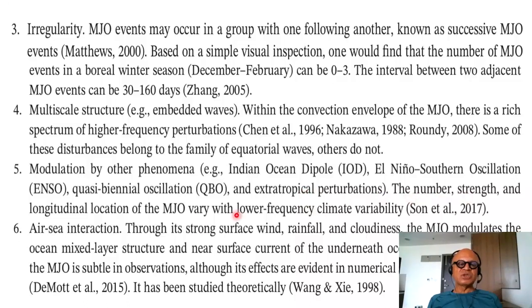The number and strength and longitudinal location of the MJO vary with lower frequency climate variability. MJO is a moving heat source. Background SST distributions have a high impact on convection. So the longitudinal location is critical. Air-sea interactions. Through its strong surface wind, rainfall and cloudiness, the MJO modulates the ocean mixed layer structure and near-surface current of the underneath ocean. Oceanic feedback to the MJO is subtle in observations, although its effects are evident in numerical simulation and prediction. It was first proposed by Krishnamurti in 1988.